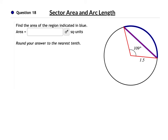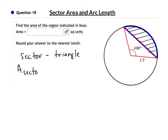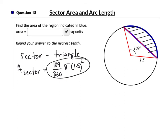Question 18. We're going to find the area of the region indicated in blue — this is called a segment of the circle, when we cut off a triangle. To do this, we need to take the sector and subtract the area of the triangle. This is going to involve trig. The area of the sector will be 109 over 360 times pi times 1.5 squared. I'm not going to work this out yet because it's not a good idea to round until you get to the very end.